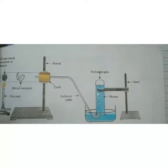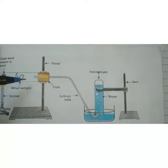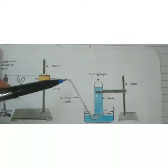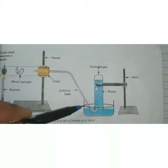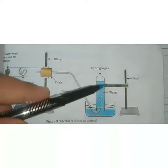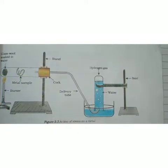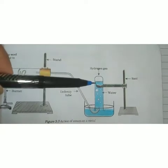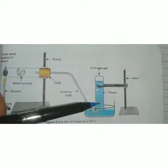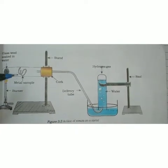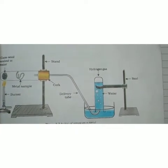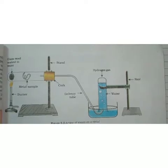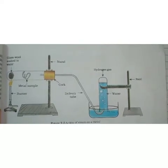The metal sample becomes a metal oxide, and the hydrogen gas produced comes through the delivery tube. In the beaker we have kept water with an inverted test tube. Whatever gas is produced makes bubbles there, showing that hydrogen gas is produced and the metal sample becomes a metal oxide. This experiment shows that some metals react with steam but do not react with cold water or hot water.